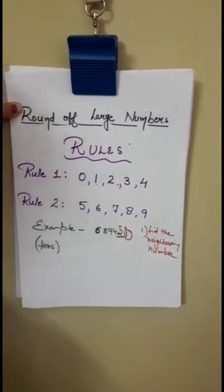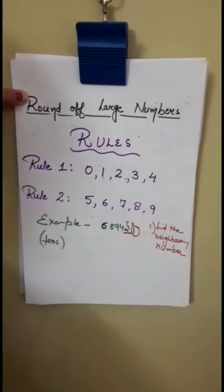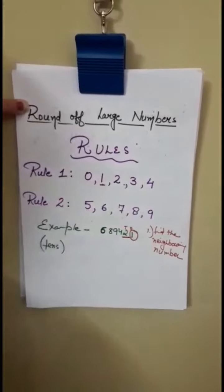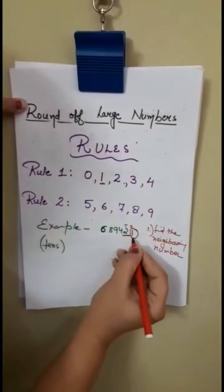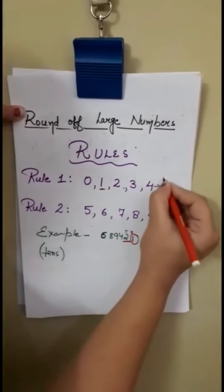Now after finding the neighboring number, just let me know what is the neighboring number. It is 1. Agar humara numbers 0 se lekar 4 ke beech mein aate hai, tab humara we have no change.